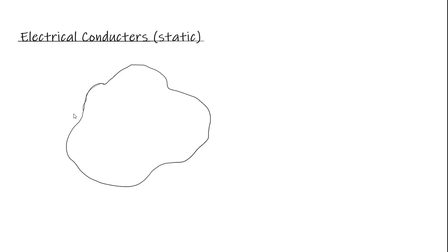How do we know that? Suppose the outside surface was not an equipotential, and the equipotential line followed some different path. Consider an electron on the surface — if this is not an equipotential, the electron will want to move to areas of lower potential. But let me first introduce how charges distribute themselves before finishing that argument.